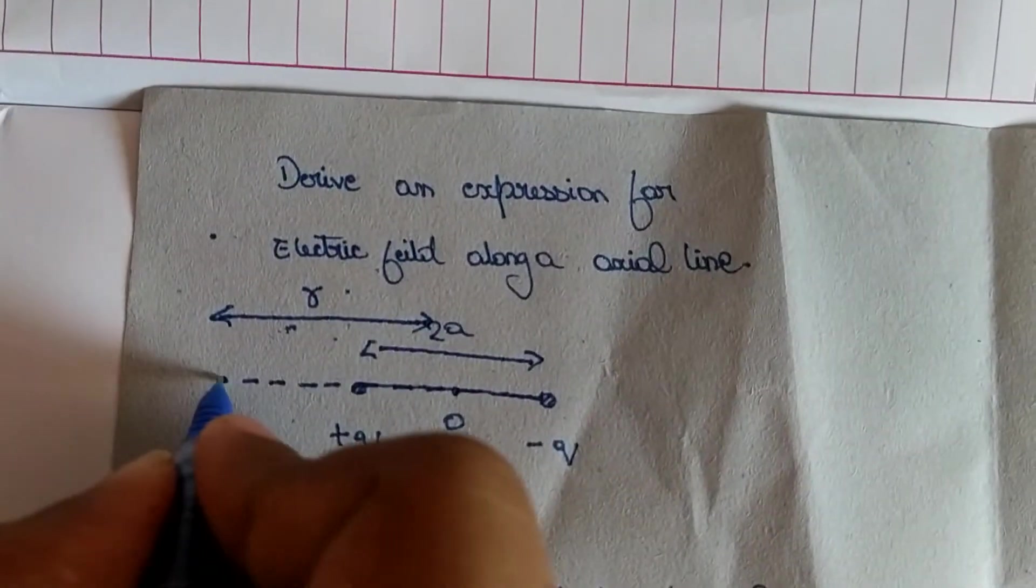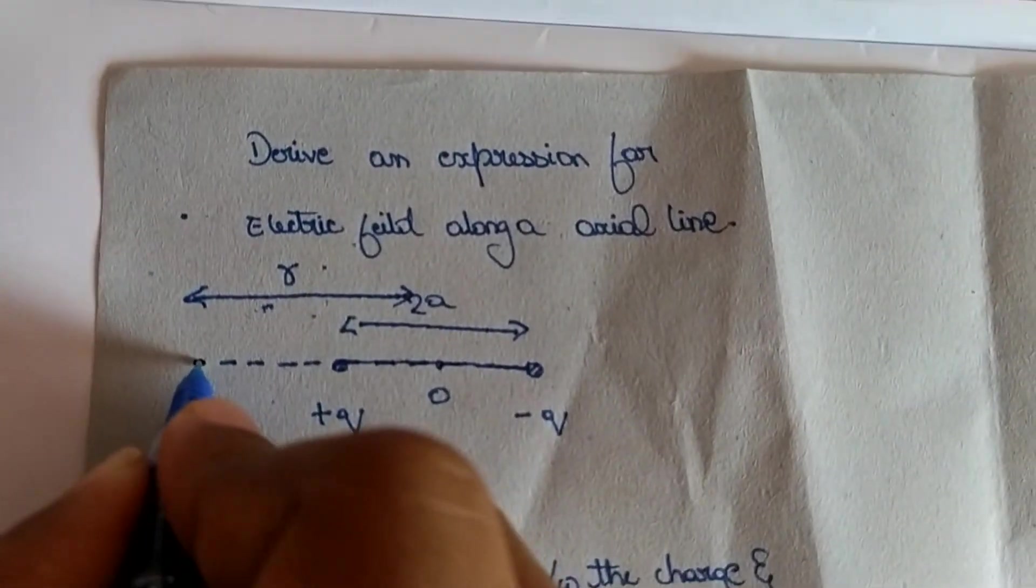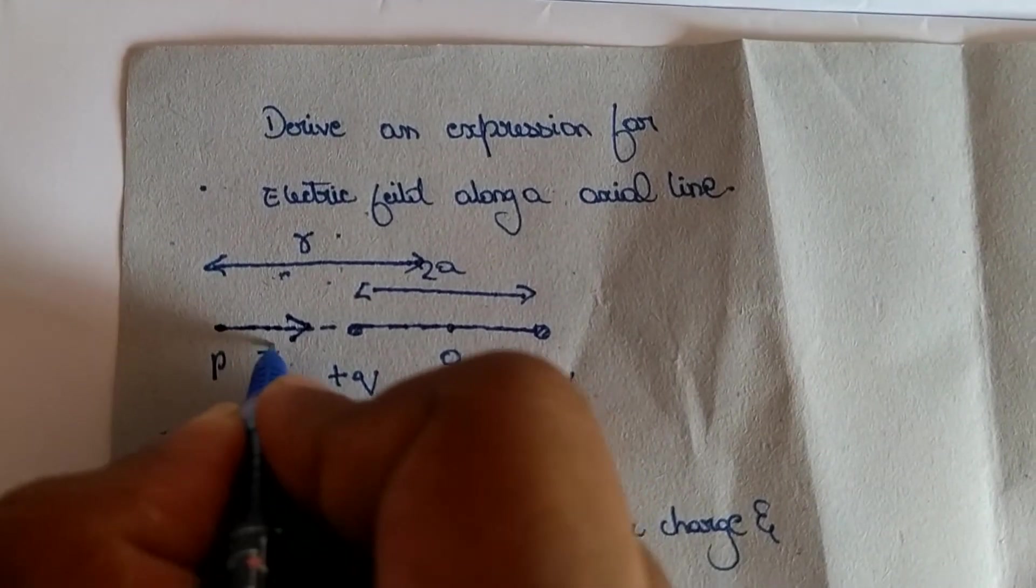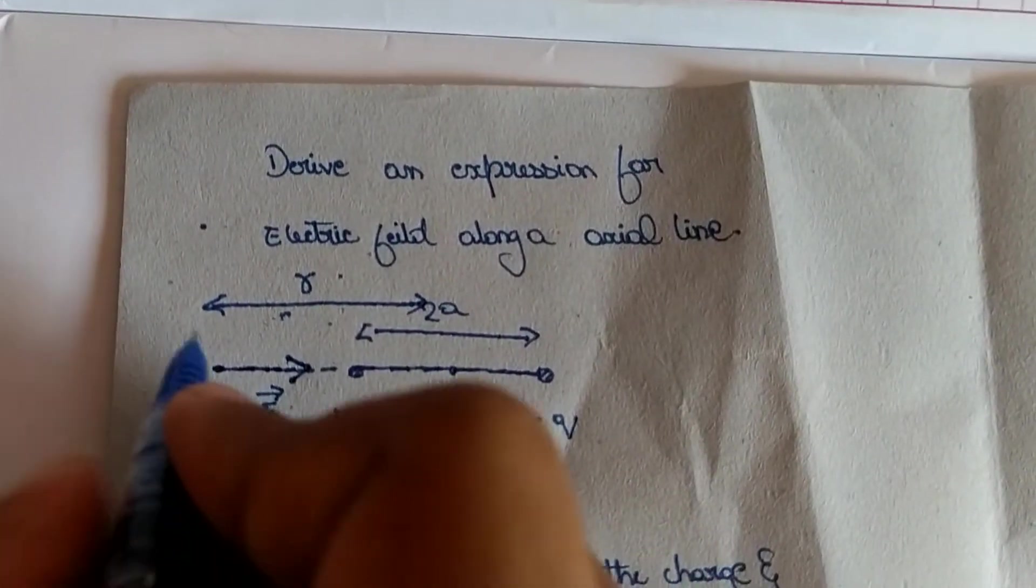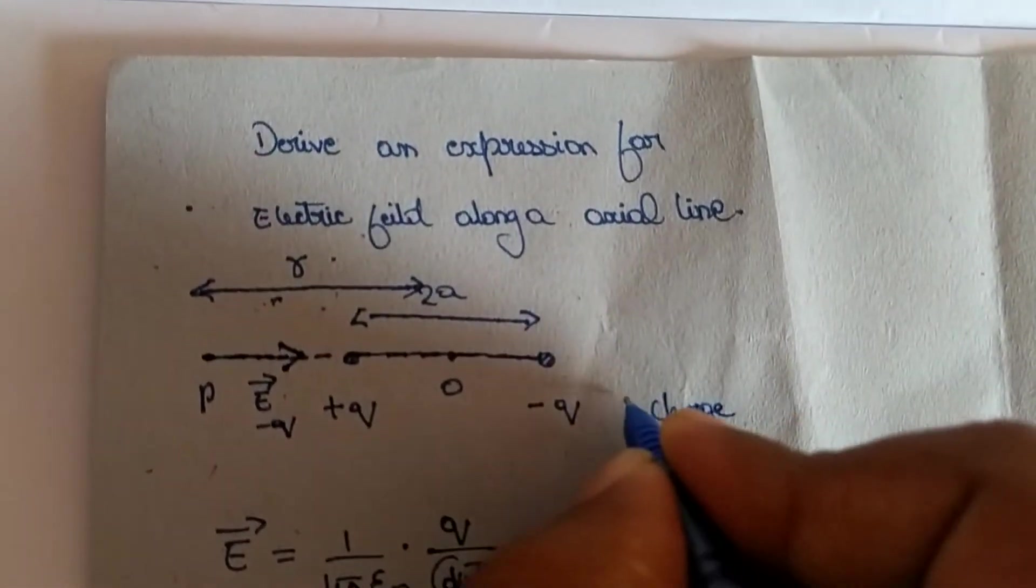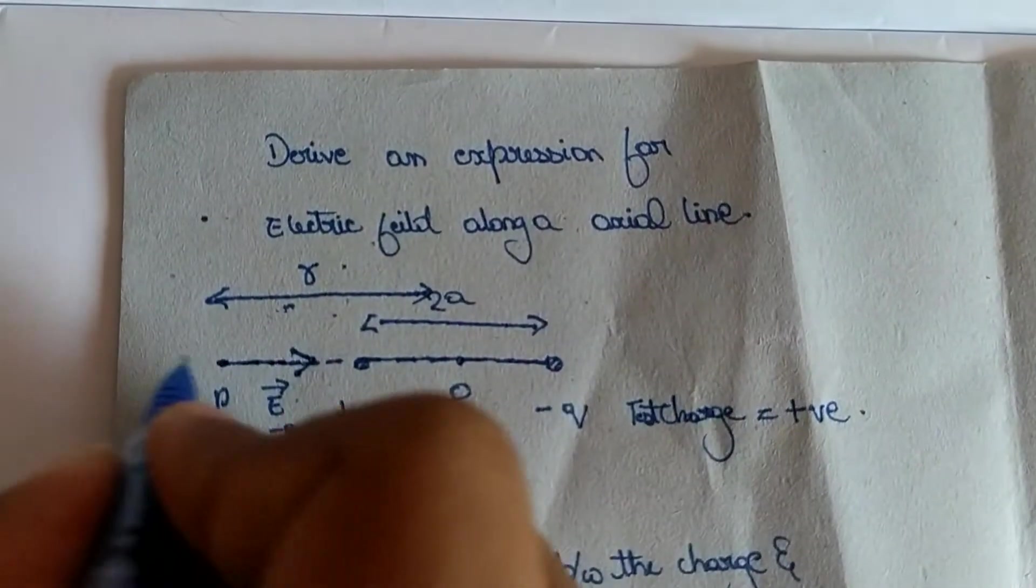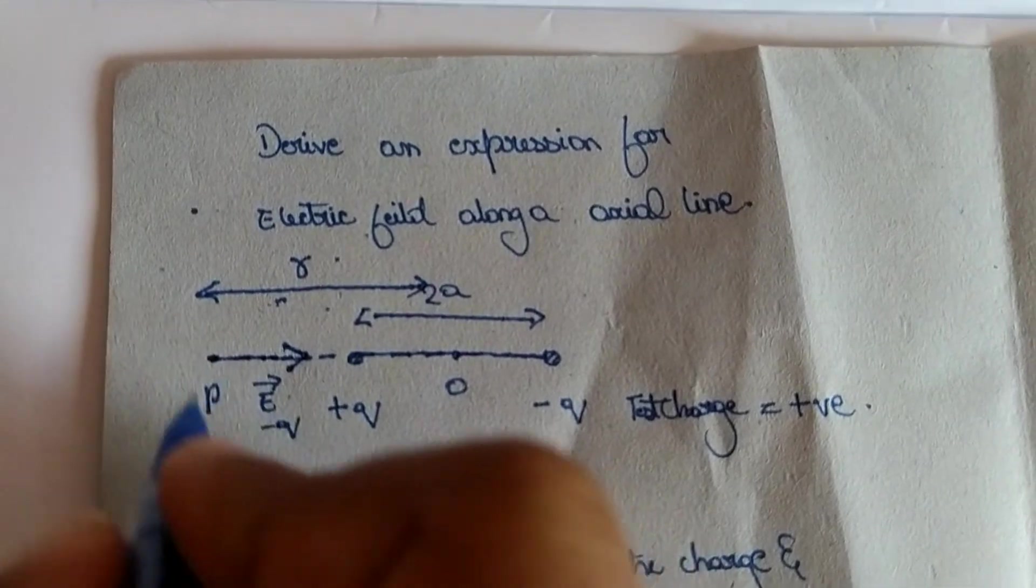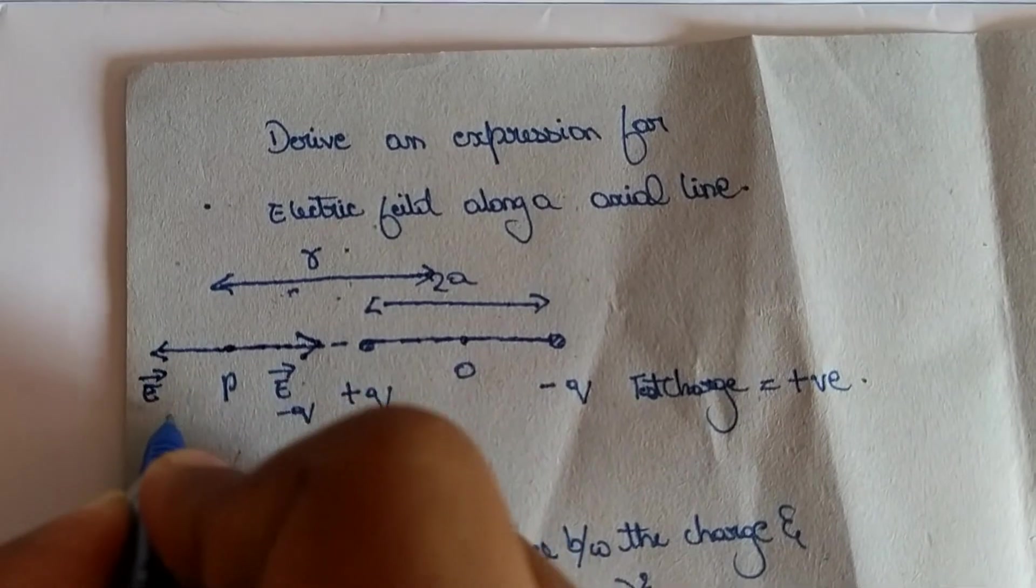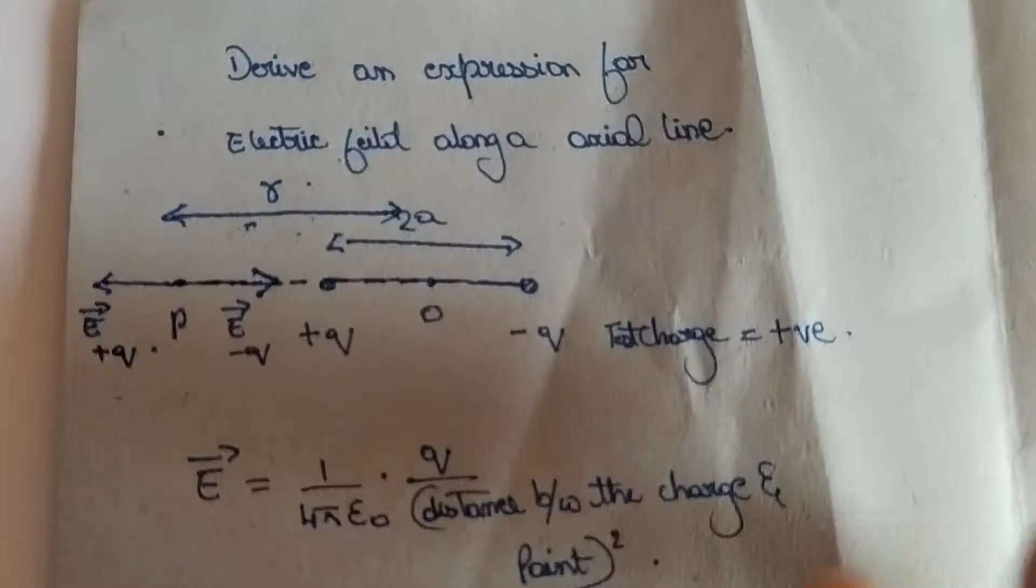At the point P, the electric field due to minus charge is attractive, hence it acts towards minus Q. This electric field is due to minus Q and the charge is always positive. Remember, the charge is always positive.